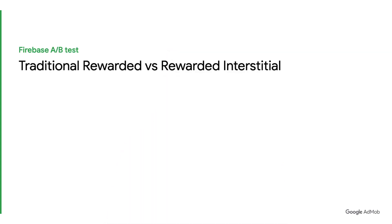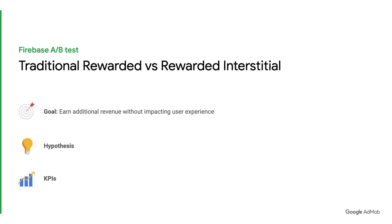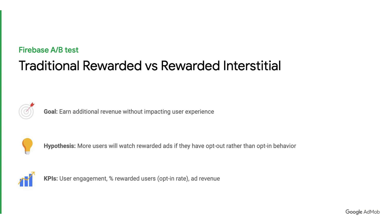With every new ad format, A-B testing is recommended to ensure that you get the best results for your app. You can leverage Firebase to compare the performance of rewarded interstitial ads with traditional rewarded ads. Before setting up the experiment, set your goal, hypothesis, and KPIs. The goal here can be to earn additional revenue without impacting the user experience. A sample hypothesis can be that more users will watch rewarded ads if they have opt-out rather than opt-in behavior. The KPIs to measure the experiment's success can be user engagement, percentage of rewarded users who opt-in, and the amount of ads revenue generated.